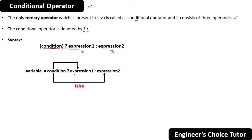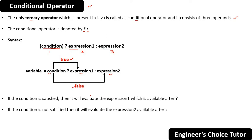The syntax is clear: if the condition is true then expression 1 is going to evaluate, and if the condition is false then expression 2 is going to evaluate. If the condition is satisfied — meaning true — it will evaluate expression 1, which is available after the question mark. If the condition is not satisfied, it will evaluate expression 2, available after the colon symbol.